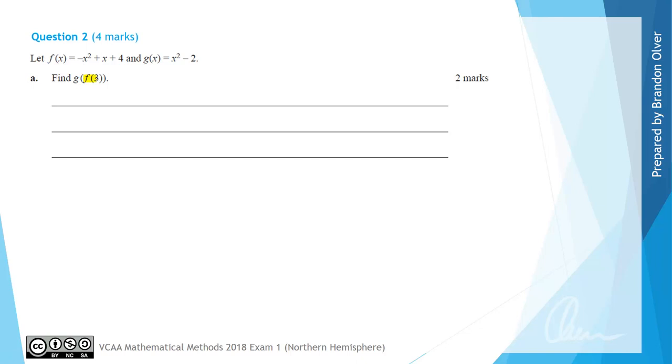So the first thing we're going to do is look at this f(3) part which means we're going to substitute 3 into this quadratic expression here. So f(3) is going to equal negative, and then in brackets we'll have 3 squared plus 3 plus 4.